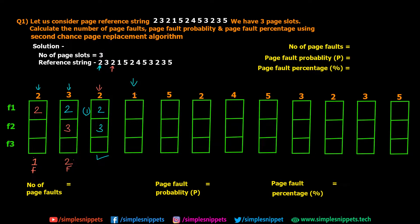Next, page 1 is requested. We have pages 2 and 3 in memory but not page 1, so this is a page fault — the 3rd page fault. Page 1 is loaded into memory. We now have pages 2, 3, and 1 in memory, and remember the reference bit for page 2 is still set to 1.